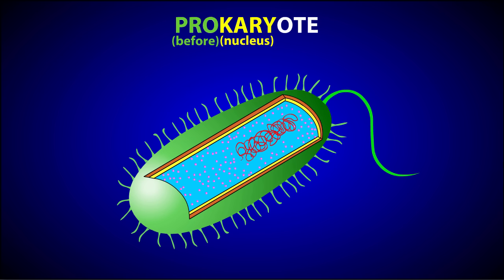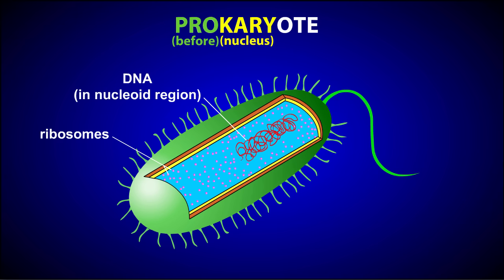The inside of the prokaryotic cell is basically an open unit with no compartments. There are no membrane-bound organelles. However, small structures called ribosomes are scattered throughout its cytoplasm. The cell's DNA is located in a region of the cytoplasm called the nucleoid region. The nucleoid region is not the same thing as a nucleus because it's not enclosed by a membrane.